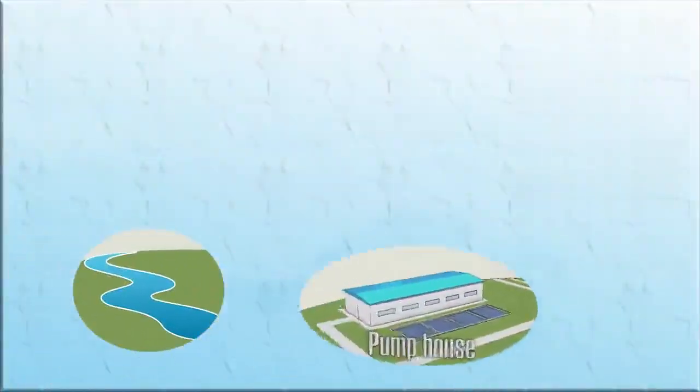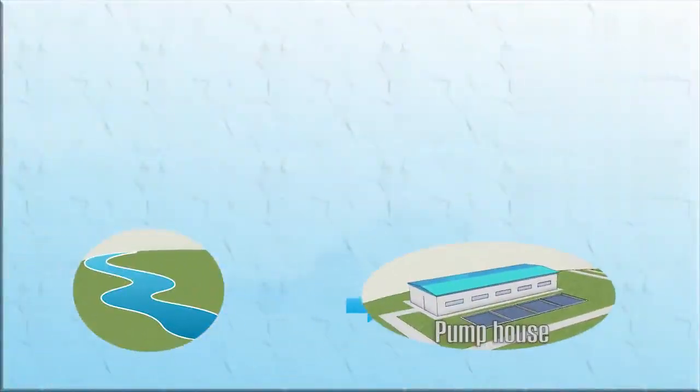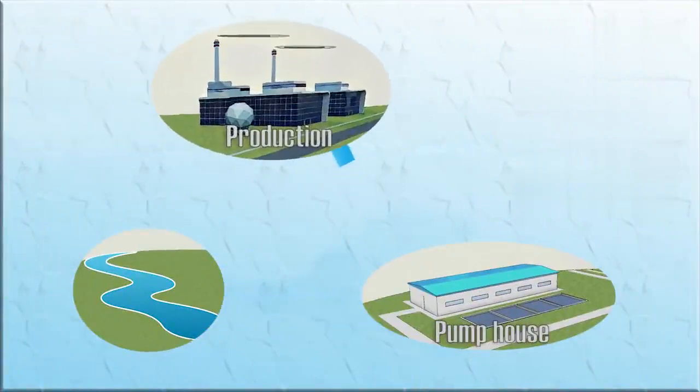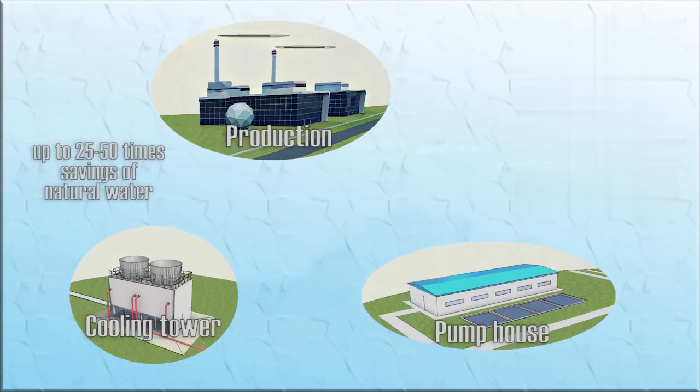A circulating water system is a system in which water is used as a refrigerant for cooling heat exchange equipment. The use of cooling towers saves natural water from 25 to 50 times compared with once-through cooling and prevents thermal pollution of water bodies.